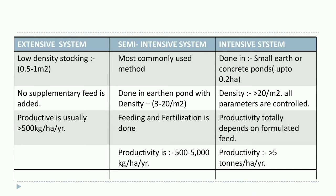In the intensive system, culture is done in small earthen or concrete ponds of less than 0.2 hectare. Stocking density is more than 20 per meter square and all water quality parameters are controlled. Productivity is totally dependent on formulated feed and exceeds 5 tons per hectare per year.